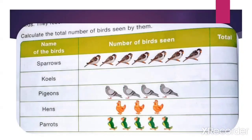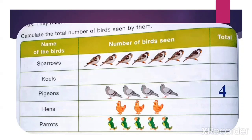First we will calculate the number of birds seen. The first picture is of sparrows — count: 1, 2, 3, 4, 5, 6, 7. So write down 7 in the total column. Then coils — 0. Pigeons: 1, 2, 3, 4 — write 4. Next is hens: 1, 2, 3 — write 3. And the next is parrots: 1, 2, 3, 4, 5 — write 5.